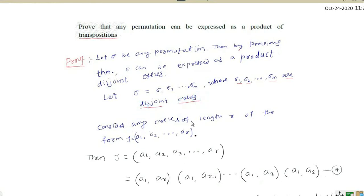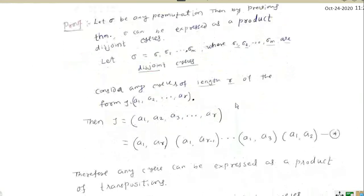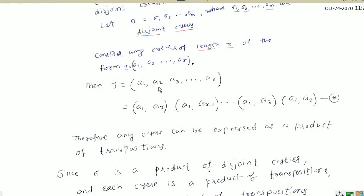Consider any cycle tau of length r of the form tau = (a1, a2, ..., ar). Then this tau can be written as a product of transpositions as follows: tau = (a1, ar) · ... · (a1, a3) · (a1, a2).